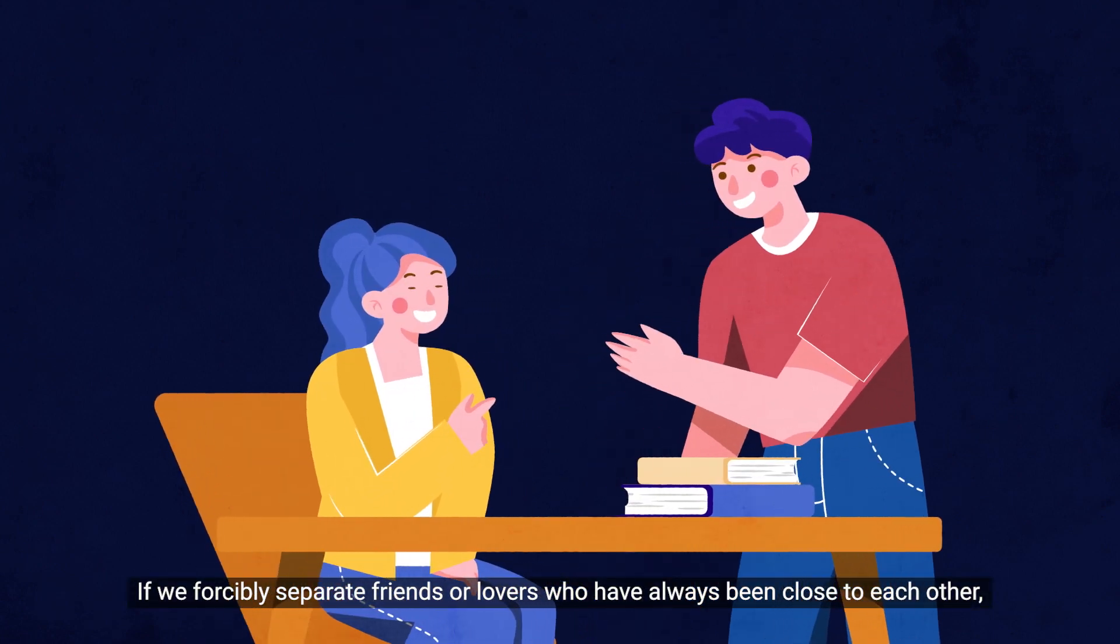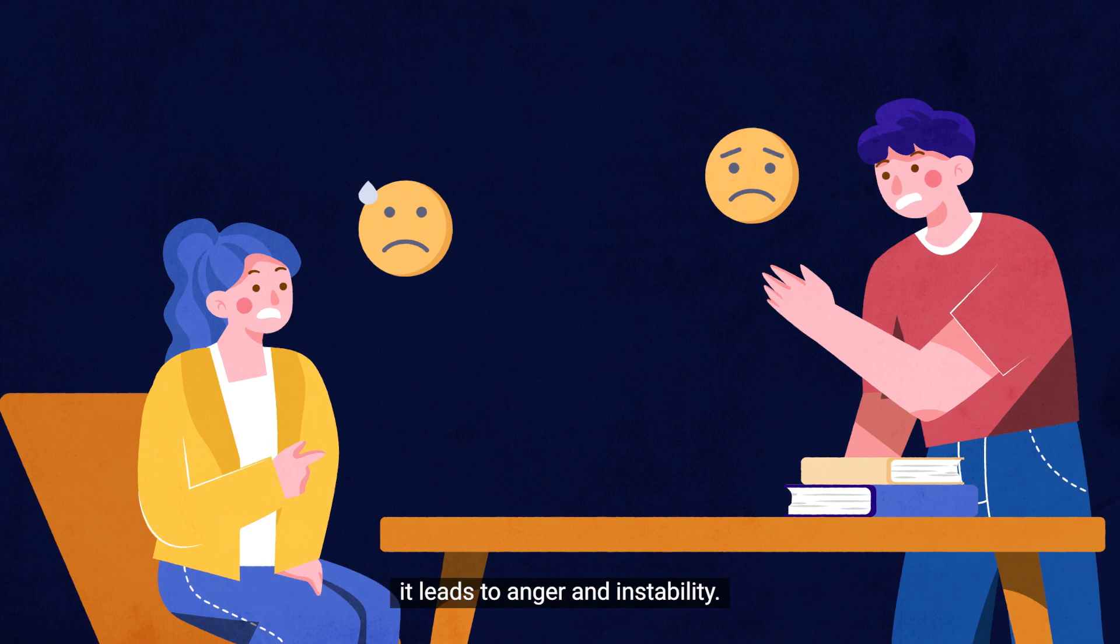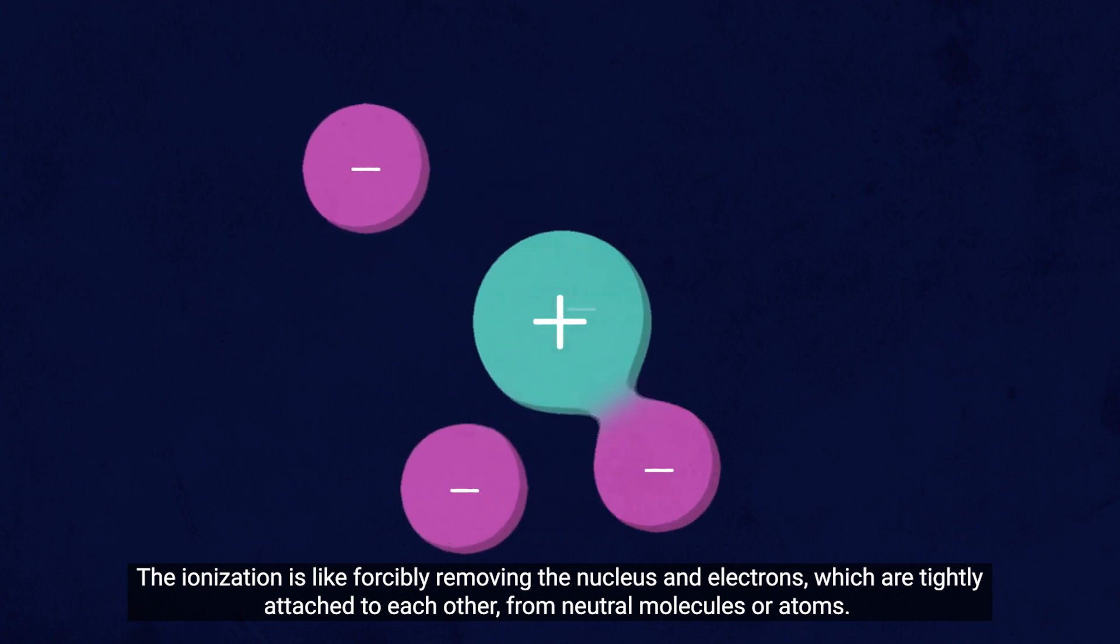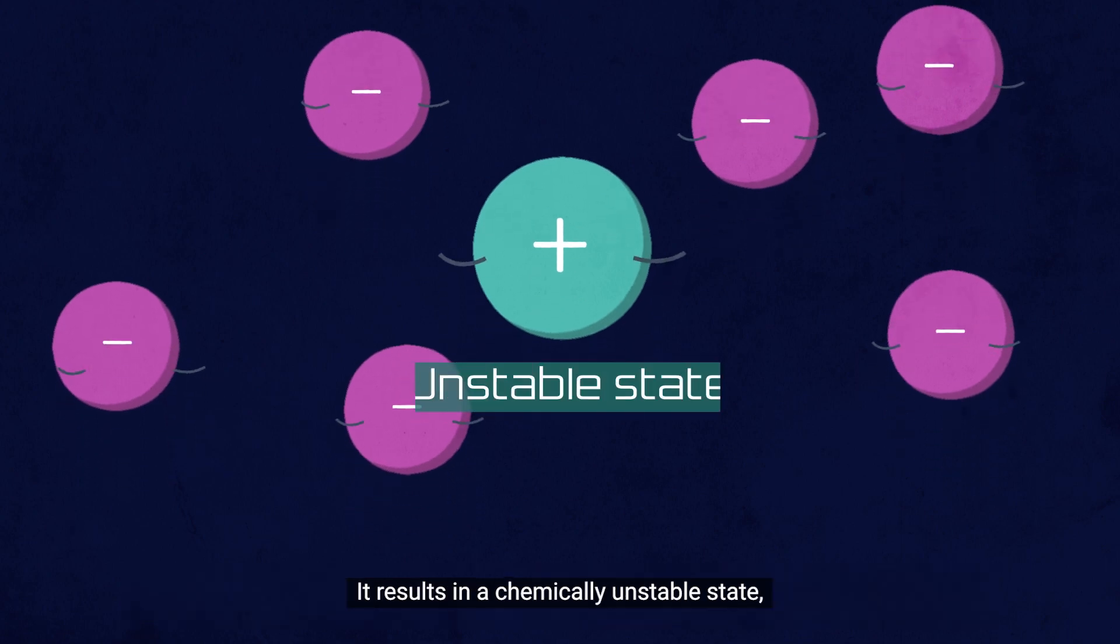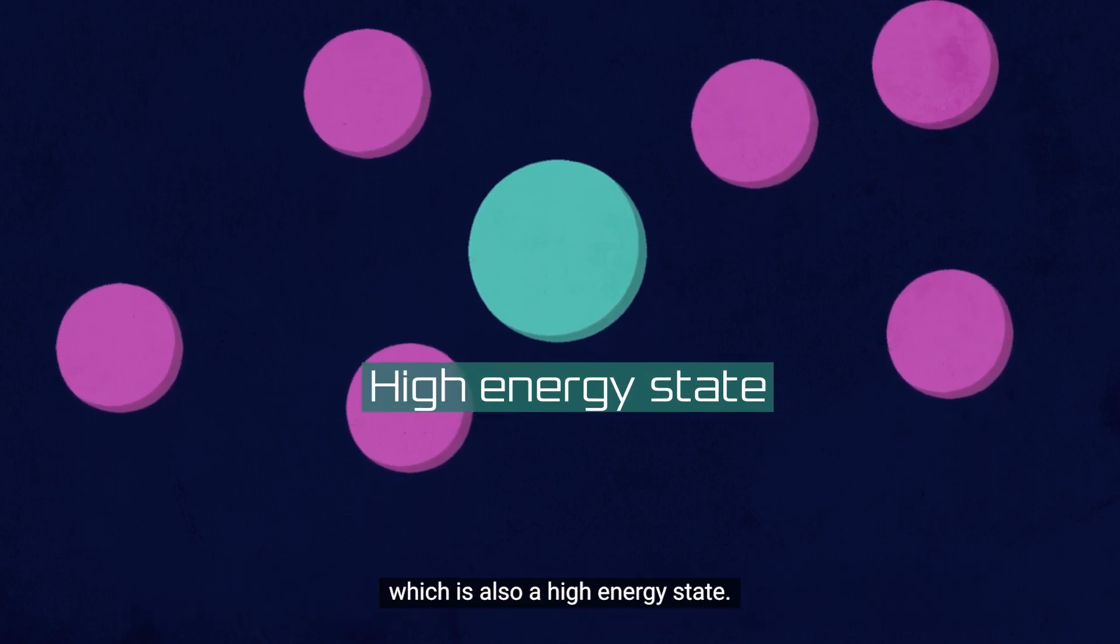If we forcibly separate friends or lovers who have always been close to each other, it leads to anger and instability. The ionization is like forcibly removing the nucleus and electrons, which are tightly attached to each other, from neutral molecules or atoms. It results in a chemically unstable state, which is also a high-energy state.